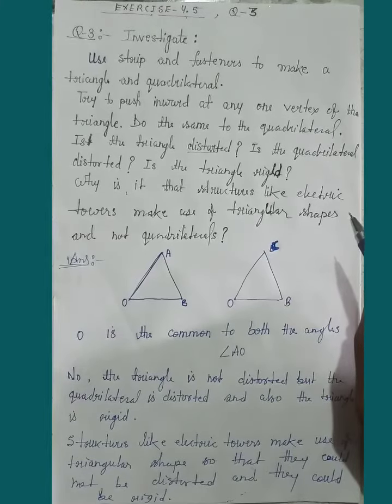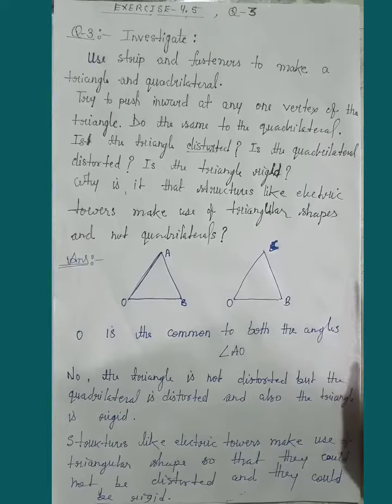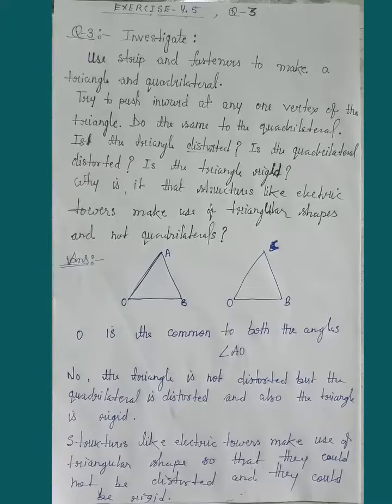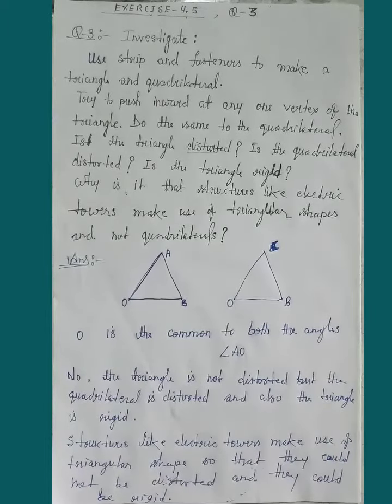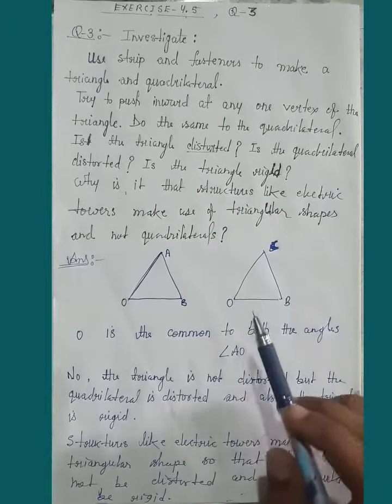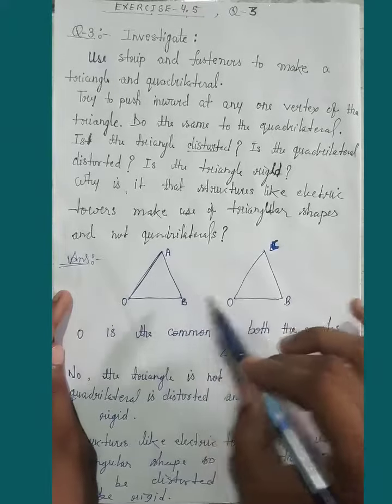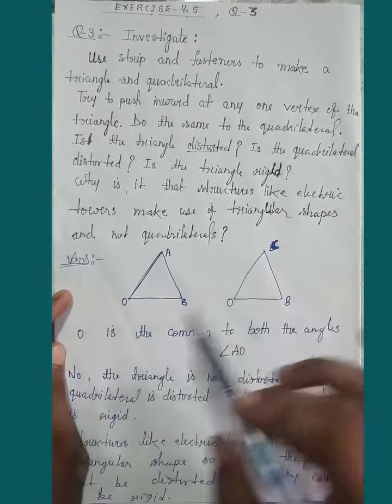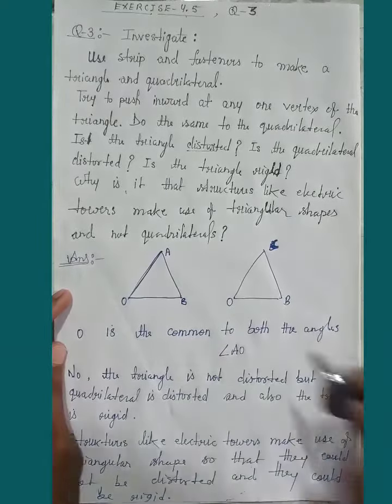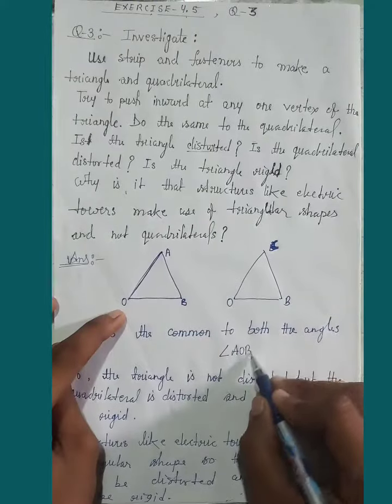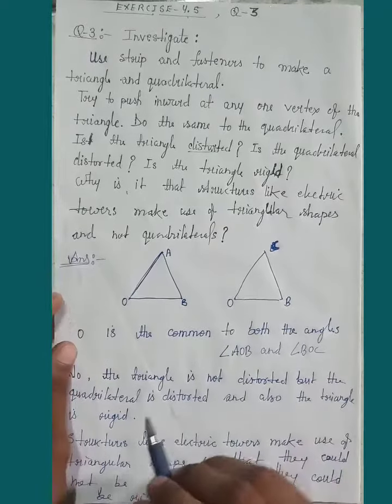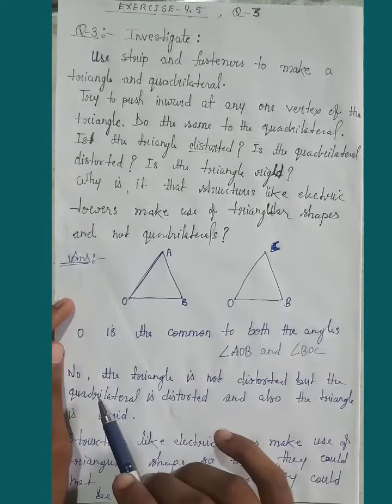So we are saying that you have a triangle and quadrilateral, and if you try to change the shape, which shape will change? When we apply force to the triangle, the triangle will not change. What is the common to both angles, angle AOB and angle BOC?